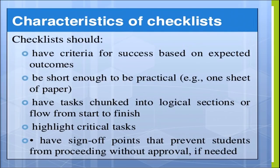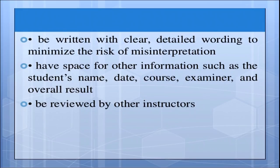Characteristics of checklist: it should have criteria for success based on expected outcomes. It should be short enough to be practical — hopefully one sheet of paper. Have tasks chunked into logical sections or flowing from start to finish. Highlight critical tasks. Sign off points that prevent students from proceeding without approval if needed. Be written with clear, detailed wording to minimize the risk of misinterpretation. Have space for other information such as the student's name, date, course, examiner and the overall result — to be reviewed by other instructors.